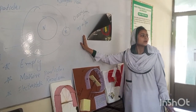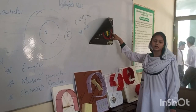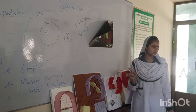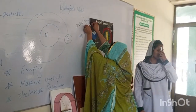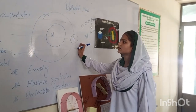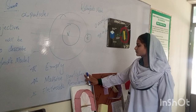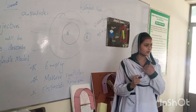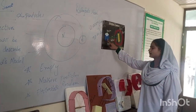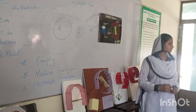Most of the alpha particles went straight through, which means the space of the atom was empty. A few particles were deflected at greater than 90 degrees due to electrostatic repulsion. This means the source of positive charge was concentrated, and the electrostatic repulsion caused the deflection.